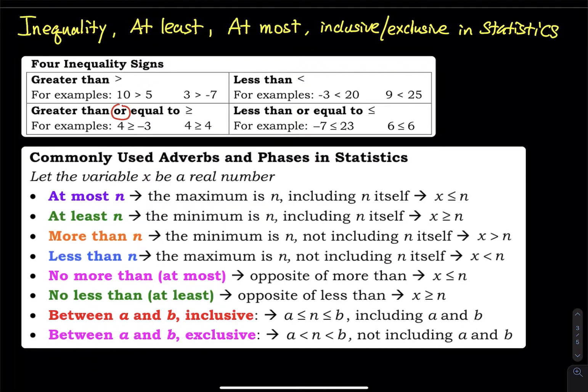For less than or equal to, negative 7 is less than 23, I don't care about the equal. 6 is equal to 6, then I don't need to care about the less than. That's how these four inequality signs work.